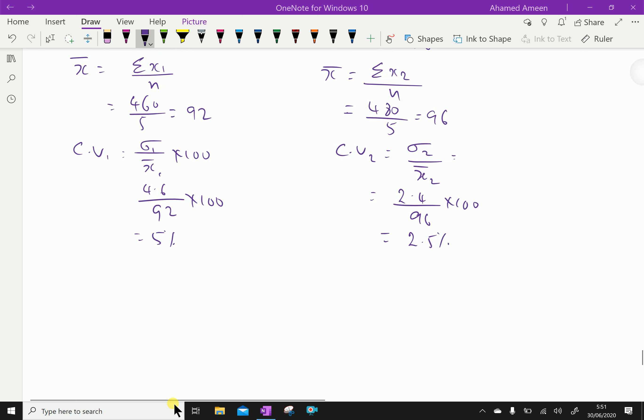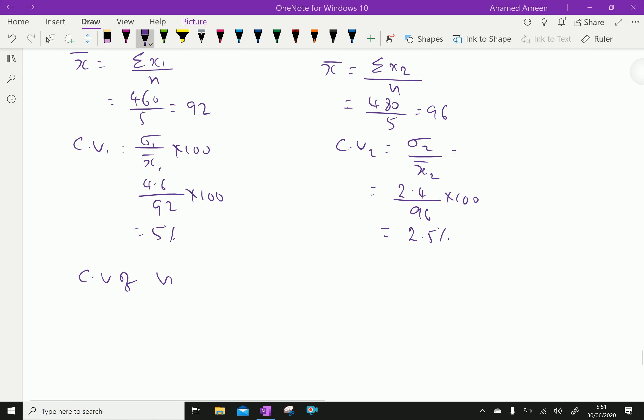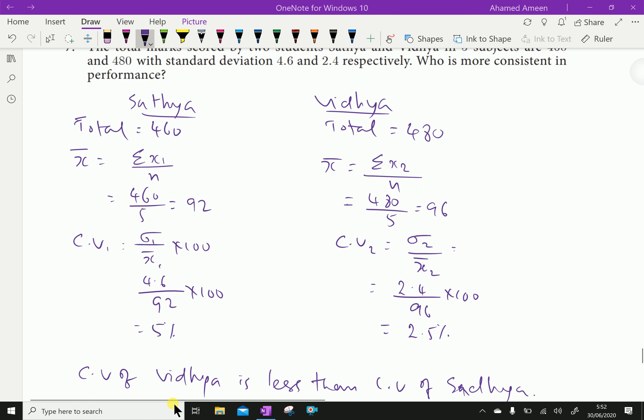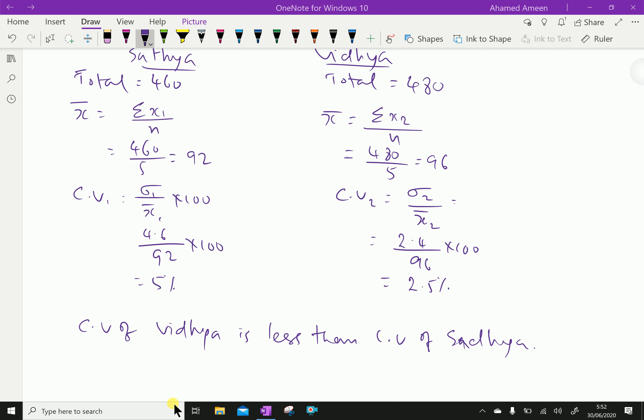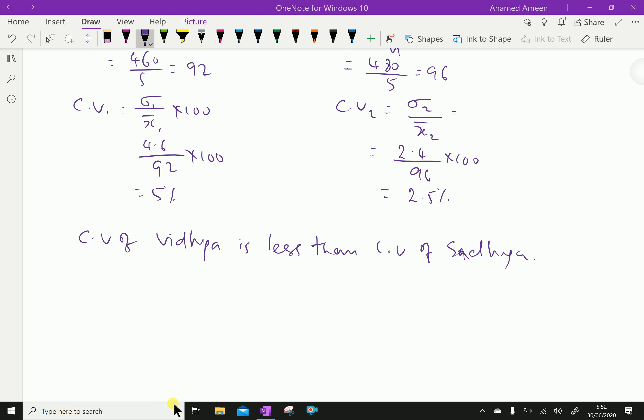Coefficient of variation of Vidya is less than coefficient of variation of Sathya. Whoever has coefficient of variation that is less has good performance. Therefore, Vidya is more consistent.